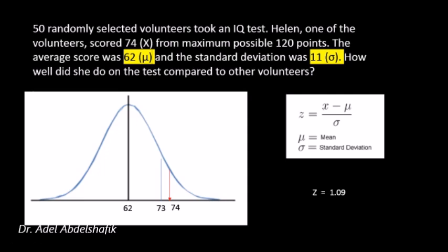Let's take this example: 50 randomly selected volunteers took an IQ test. Helen scored 74 out of a maximum of 120 points. The group mean is 62 and the standard deviation is 11. One standard deviation above the mean is 62 plus 11 equals 73, and she scored 74 — so she is slightly above one standard deviation.